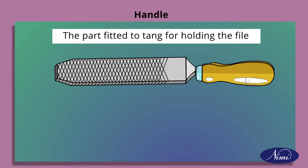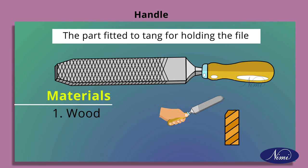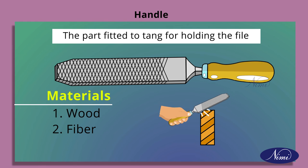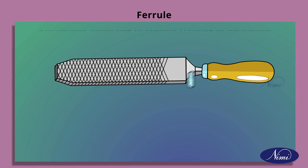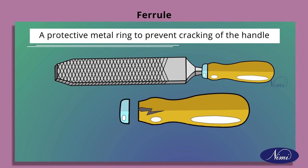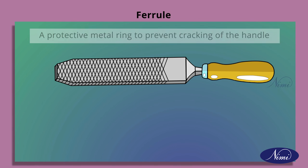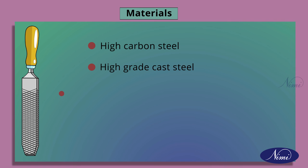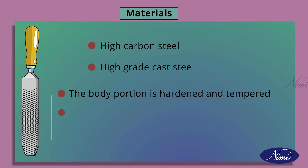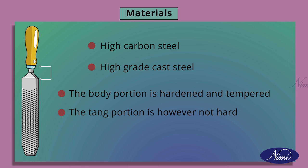The handle is generally made of wood or fiber, so that it is easy to hold and also absorbs vibration. Ferrule: a protective metal ring to prevent cracking of the handle. Regarding material, files are generally made of high carbon steel or high grade cast steel. The body portion is hardened and also tempered, while the tang portion is not hardened.